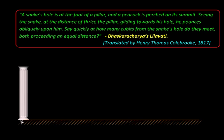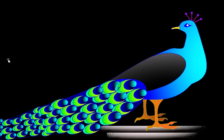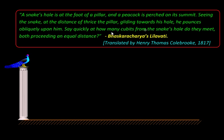The problem statement is: a snake's hole is at the foot of a pillar. Here is a pillar or column at the bottom of which there is a snake's hole. And a peacock is perched on its summit. Seeing a snake, the peacock spots a snake over here.